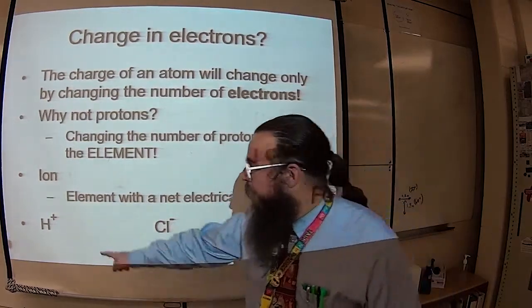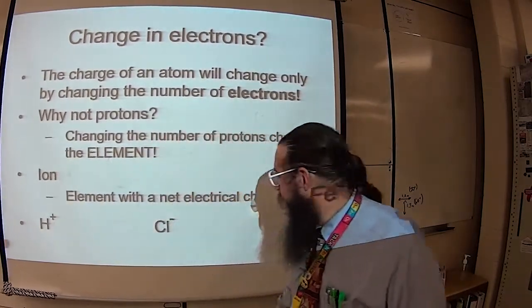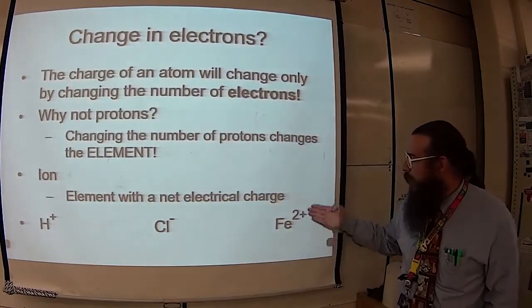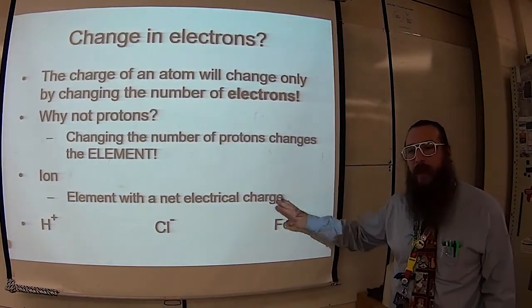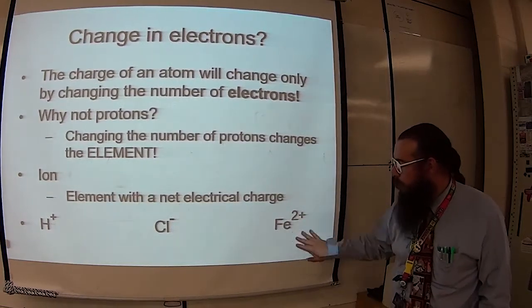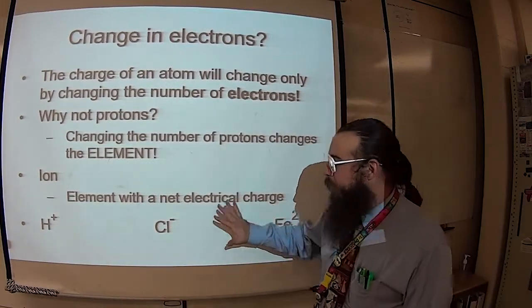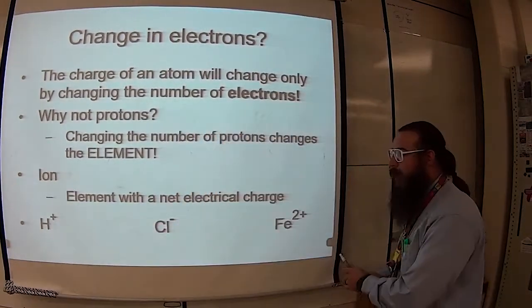For example, up here, hydrogen plus, that means plus one. Chlorine minus, that means minus one. Iron, two plus. That's how we show it right there. That charge means that we're positive two on the old iron. These right here, moose and squirrel, are ions.